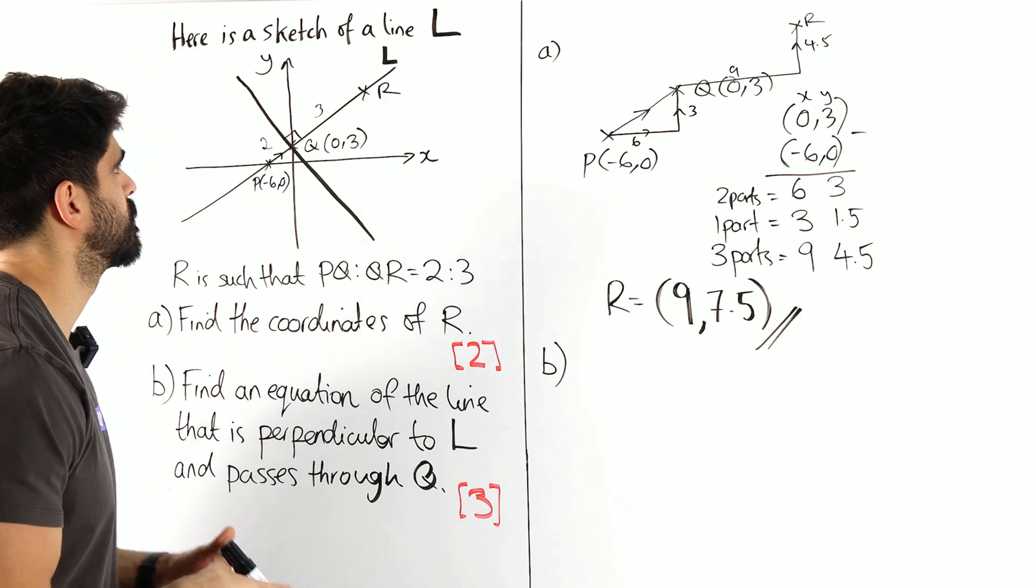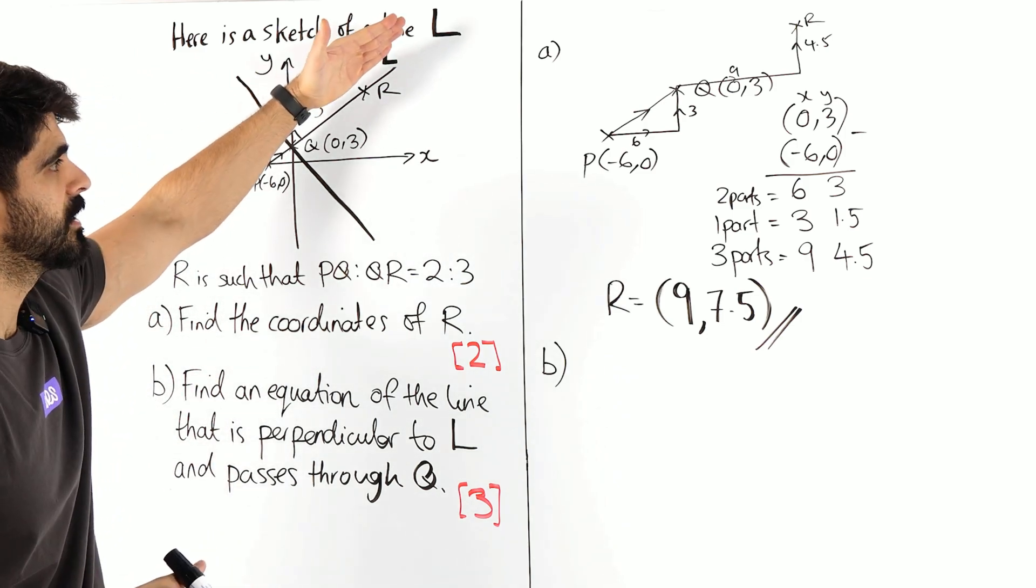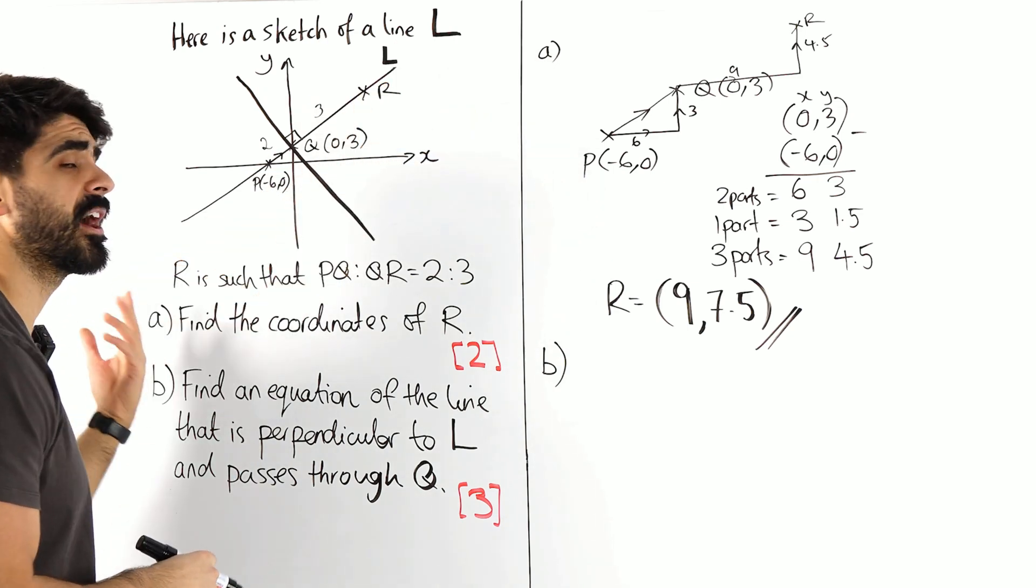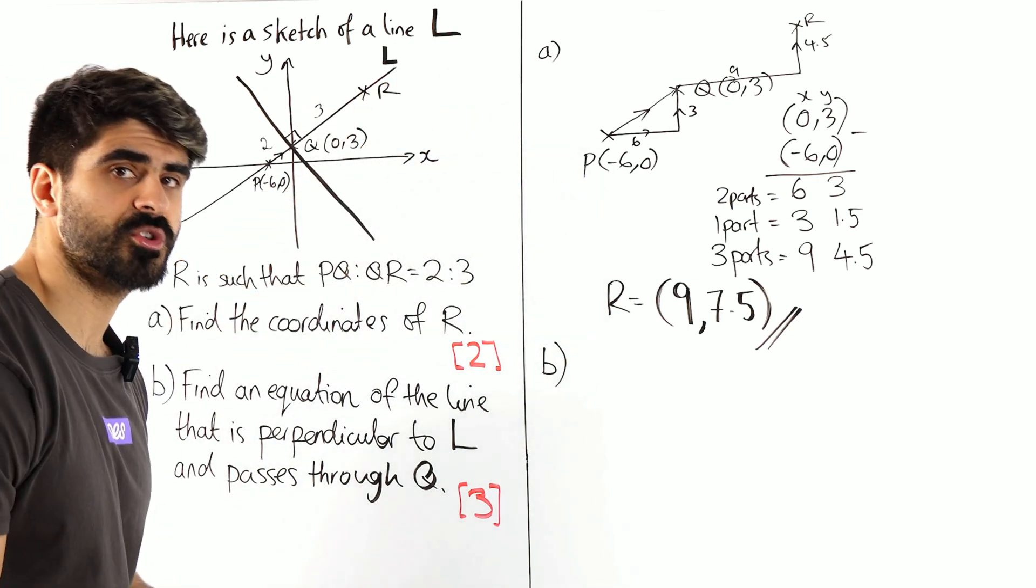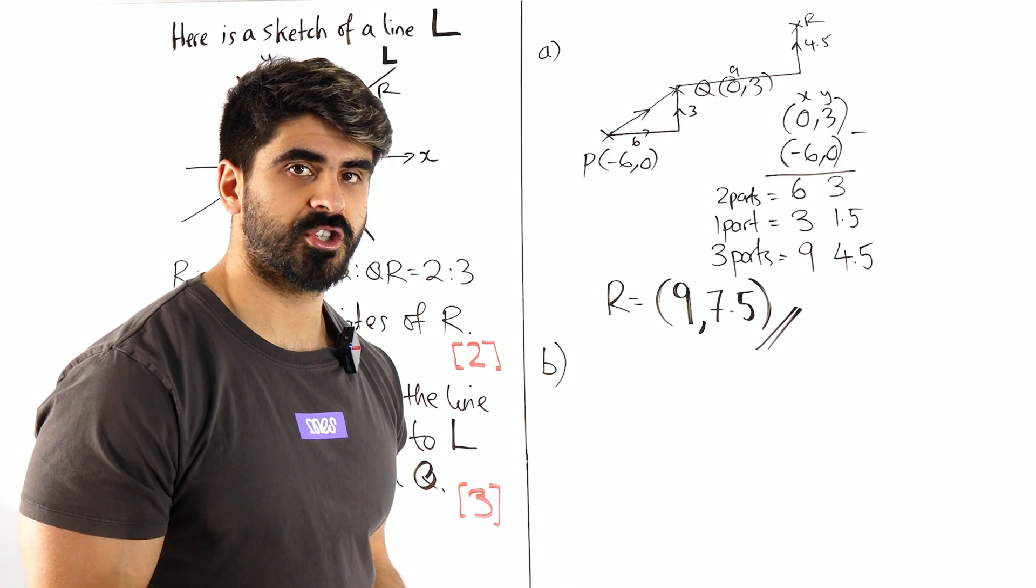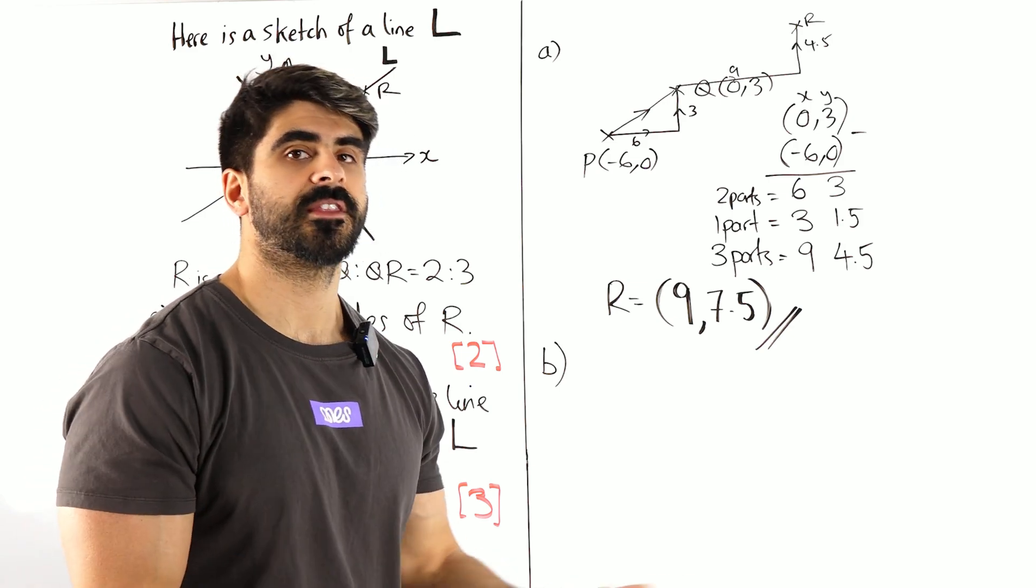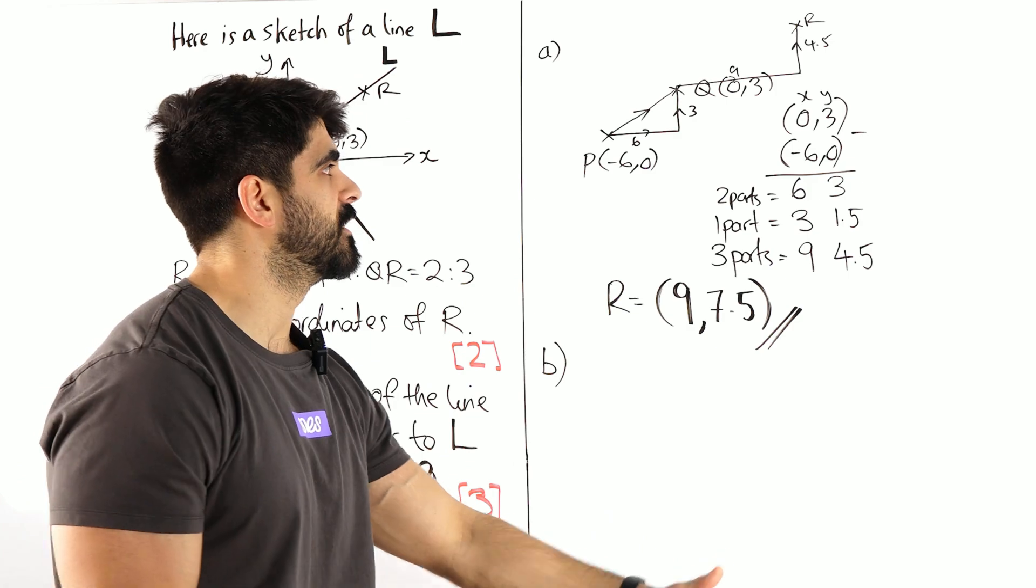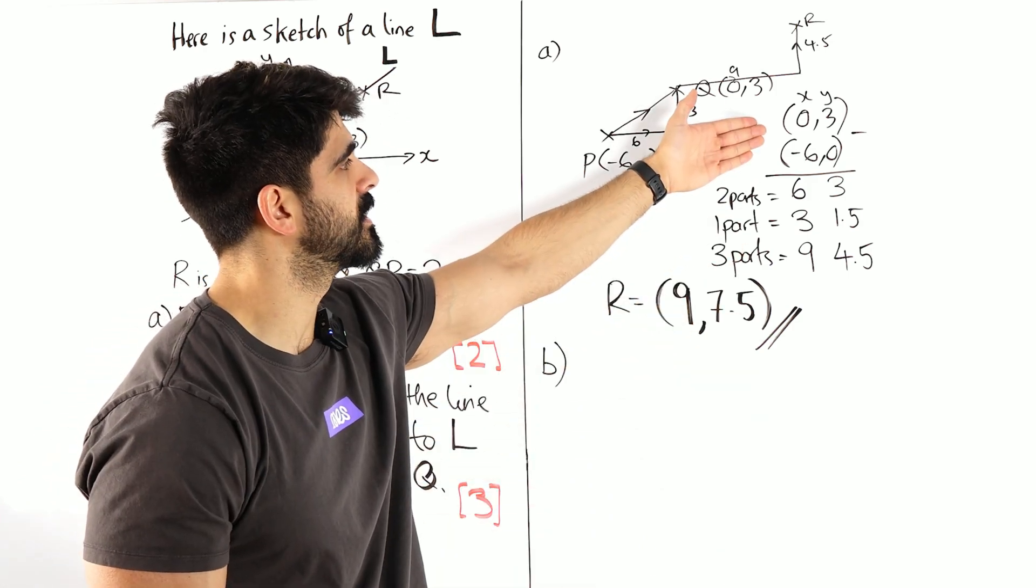So the first thing we're going to do is we're going to work out the gradient of L, then do negative reciprocals. Now how do we work out the gradient of a line? Change in Y over the change in X. Change in Y is a subtraction, you're subtracting the Y values, then you're dividing by the subtraction of X values, which we've already done. Did that here.